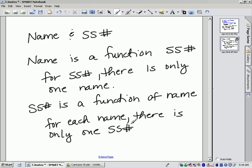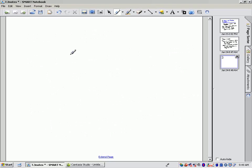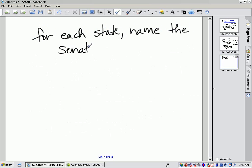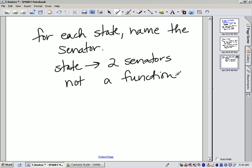What would not be an example of a function? Like if I said for each state, name the senator. Well, that's not a function, because every state corresponds to two senators. So there would be two names that would be associated with each state. So that would not be a function. So you can think of something that mathematically works well. It functions appropriately, meaning that for every input, there's only one output.